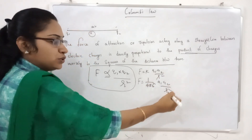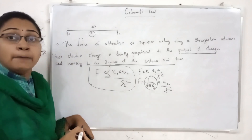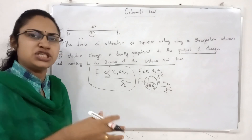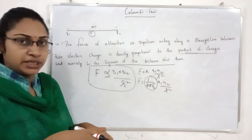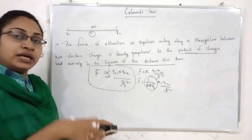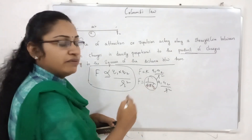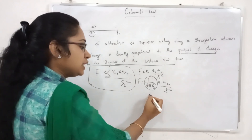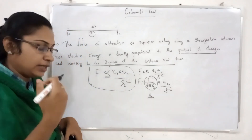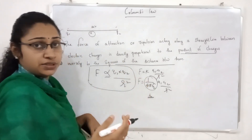The equation is 1 by 4 pi epsilon 0, Q1 Q2 by R square. That constant is the permittivity of the medium. If you call it epsilon zero, it represents air. Air means epsilon zero. Epsilon is the permittivity of the medium. Epsilon zero is the permittivity of the air.